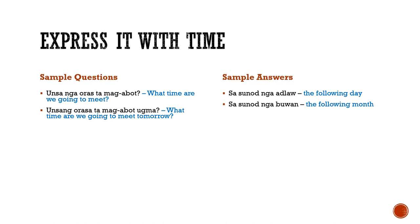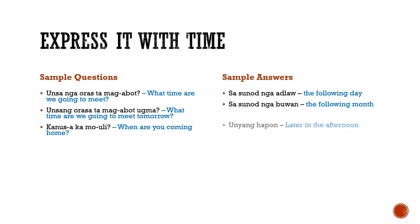'Sasunod nga adlawan' means the following month. 'Kanus'a ka mu'uli?' — kanus'a means when, ka is a shortened form of ikaw meaning you, and mu'uli means to come home. So the complete translation is: when are you coming home? 'Unyang hapon' — unya is later, hapon is afternoon — so unyang hapon means later in the afternoon.